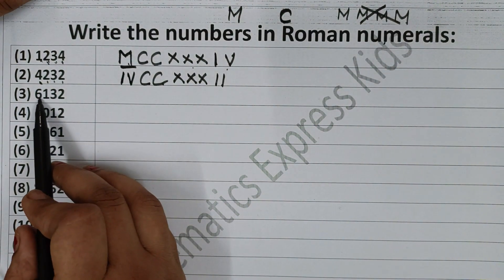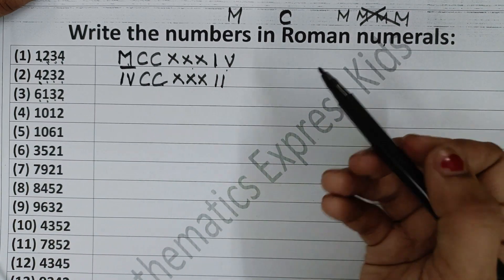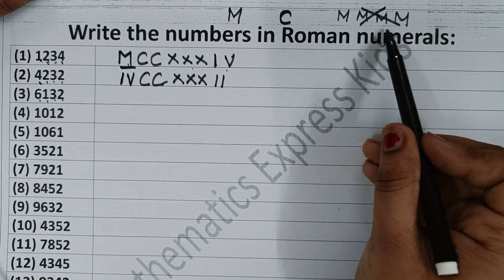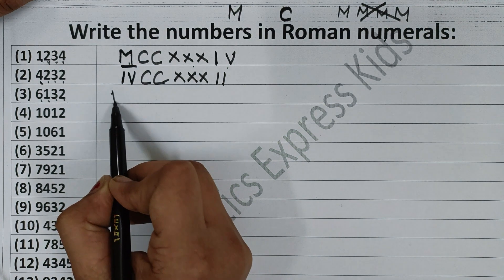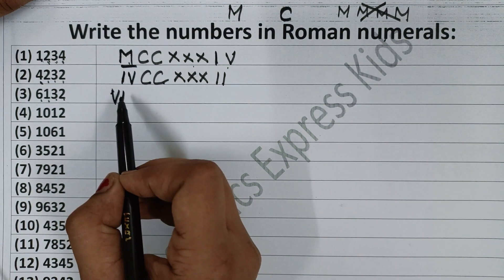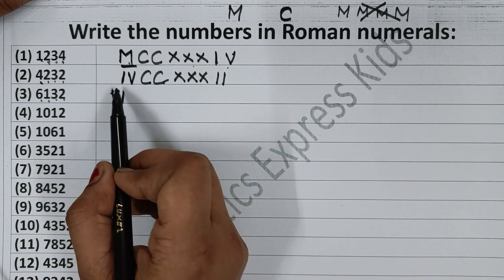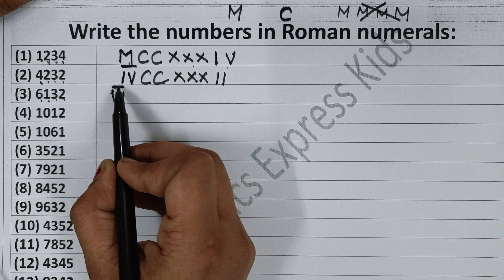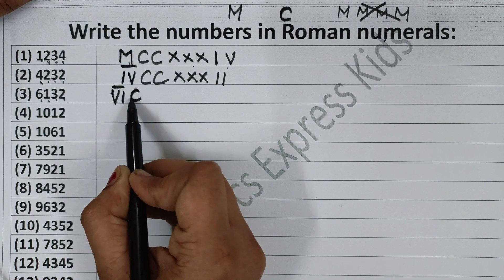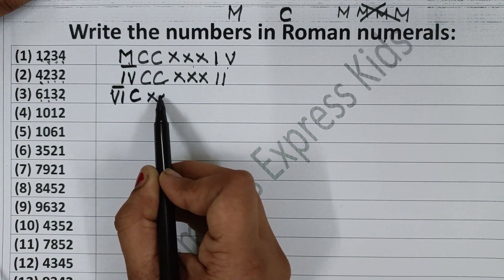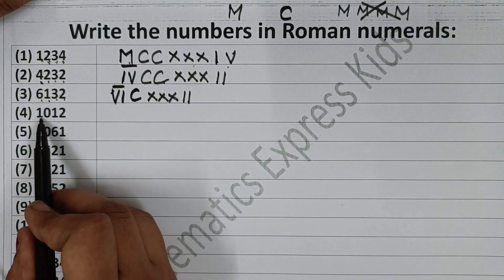Now the next one is 6132. How do you write 6000? Don't write M six times — that is not correct. Write 6: in Roman, 5 plus 1 is VI. But you need 6000, so give a bar over VI — this bar stands for 1000, making it 6000. Then 100 is C, 30 is XXX, and 2 is II.